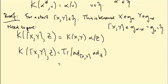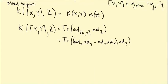K of X bracket Y with Z equals the trace of ad(X bracket Y) ad Z. Now ad is a representation of the algebra. So ad of X bracket Y equals ad X ad Y minus ad Y ad X and we stick an ad Z on the end of all that.